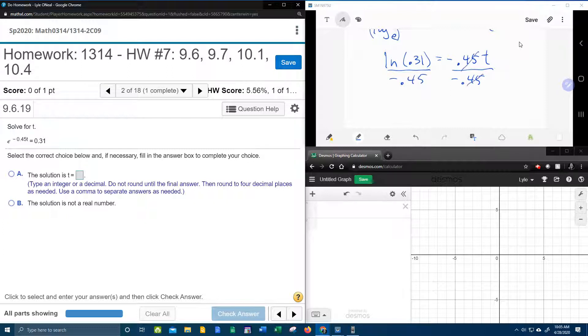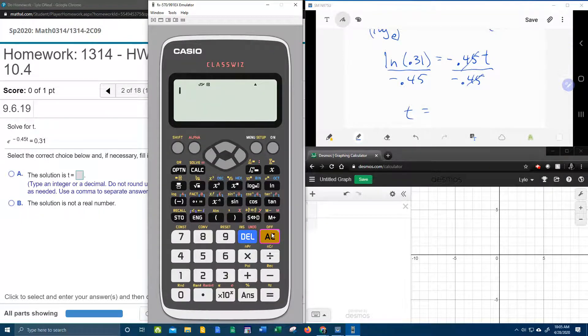And now we're going to need the help of our handy dandy calculator. So let's bring him up, and we're going to need a fraction. So we're going to hit the fraction button. We've got the natural log of 0.31, don't forget to close that parenthesis, over negative 0.45.